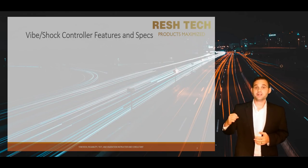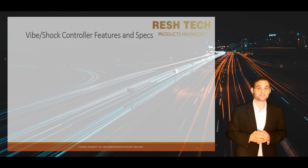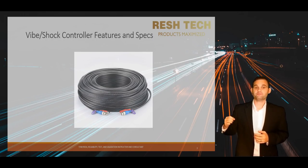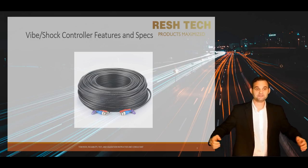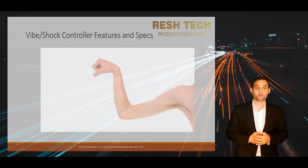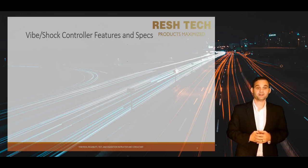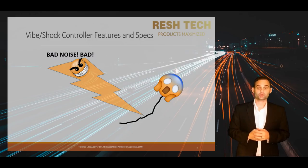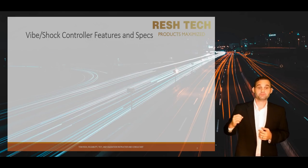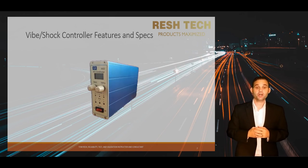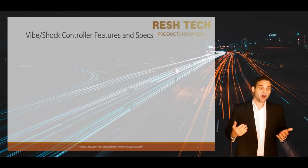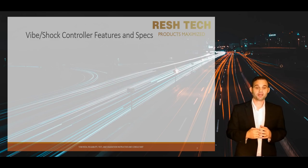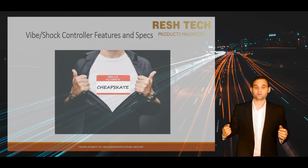Here's a tip you will not learn anywhere else, especially in a manufacturer's training course. If you are running a long run of BNC or accelerometer cable — more than 50 feet — the ICP power supply built into most vibe and shock controllers is insufficient for long-distance cable runs. You will pick up a tremendous amount of noise and can get a vibe controller abort message. If you are using a voltage mode accelerometer, you will need to purchase a separate power supply signal conditioner to overcome the voltage drop and clean up the signal. Also make sure you are using high-quality, well-shielded BNC cables for runs of 50-plus feet.